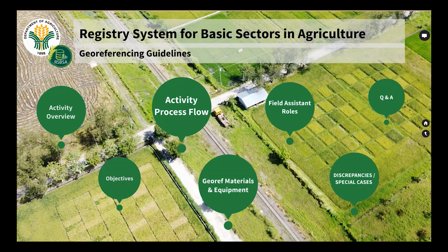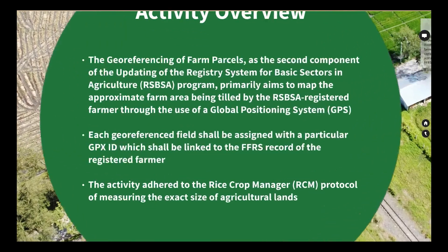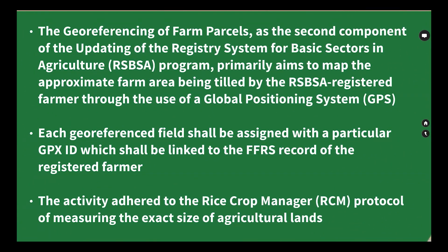The geo-referencing guidelines for our geo-referencers are the field validators' activity overview. The geo-referencing of farm parcels is the second component of the updating of the Registry System for Basic Sectors in Agriculture (RSBSA) program, primarily aiming to map the approximate farm area being tilled by the RSBSA registered farmer.